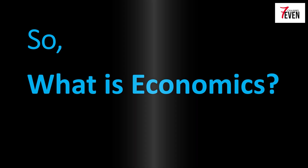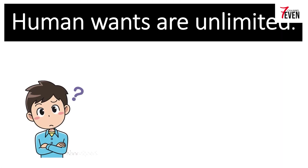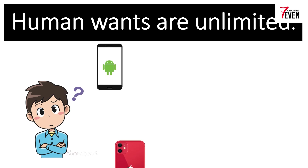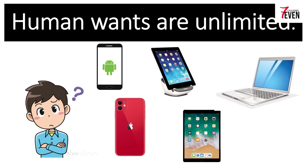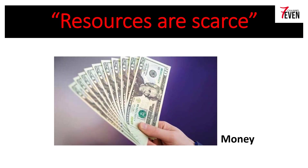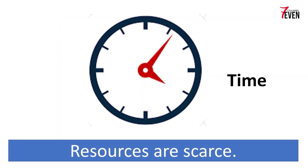So what is economics basically? People have unlimited wants — you want to have an Android phone, iPhone, tablet, iPad, or laptop. People need resources to fulfill their unlimited wants, but the resources are scarce. Money is a great example of scarce resources. You want to have all those devices, but you don't have enough money to buy all of them at the same time, so people need to make choices about how to use their scarce resources.